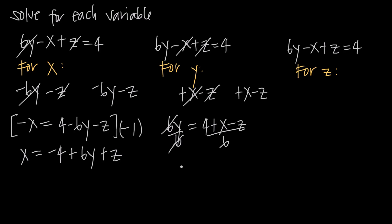1 times y is just y. So leaving us with y on the left and then 4 plus x minus z all divided by 6 on the right. So we've solved for y. Now we just need to solve for z.